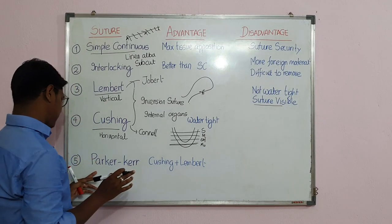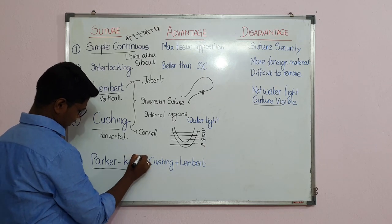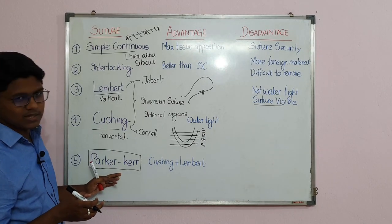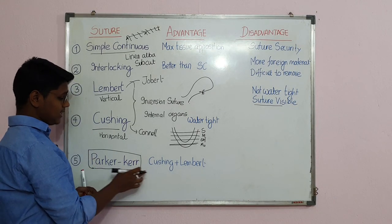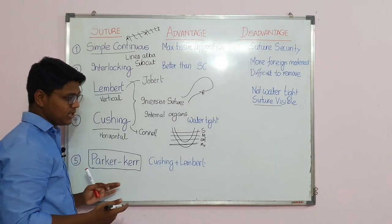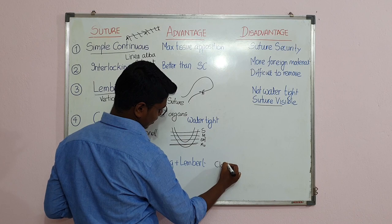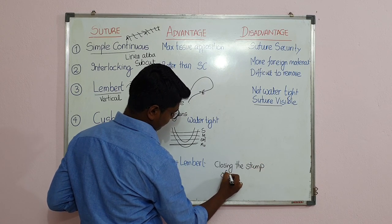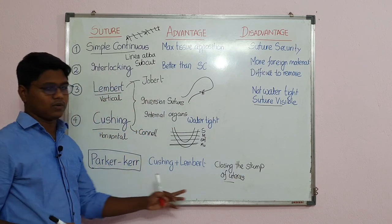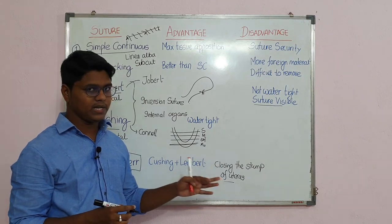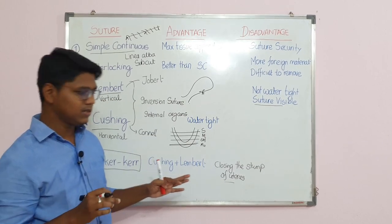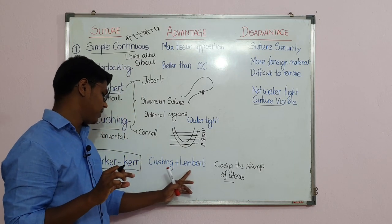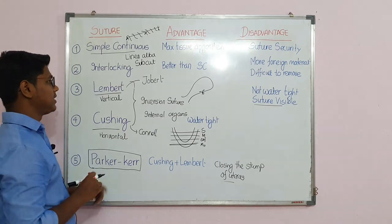Parker-Kerr suture is not commonly used nowadays, but it has appeared in surgery exam questions. Parker-Kerr is basically a combination of Cushing and Lombard, and is used for closing the stump of the uterus — for example, in pyometra surgery where the entire ovary and uterus are removed, and the uterine body stump needs to be closed using both Cushing and Lombard together.